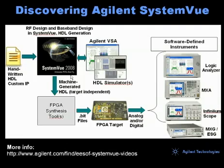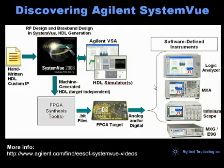In this video, we'll move the HDL code into an FPGA synthesis tool. We'll run through synthesis, place and route, generate a bit file, and download that bit file to the FPGA target. The FPGA target being used produces both digital and analog outputs, so we can demodulate the digital output with an Agilent logic analyzer, or demodulate the analog output with an Agilent MXA signal analyzer or an infinium scope.